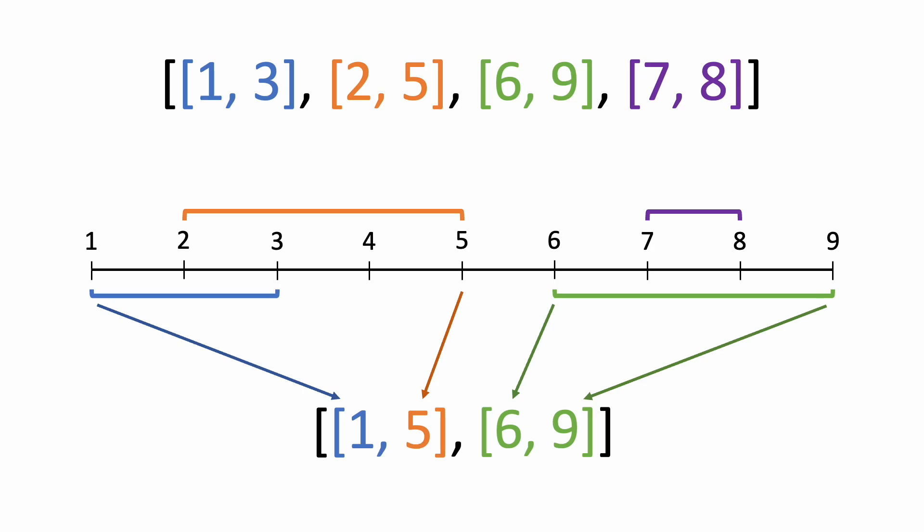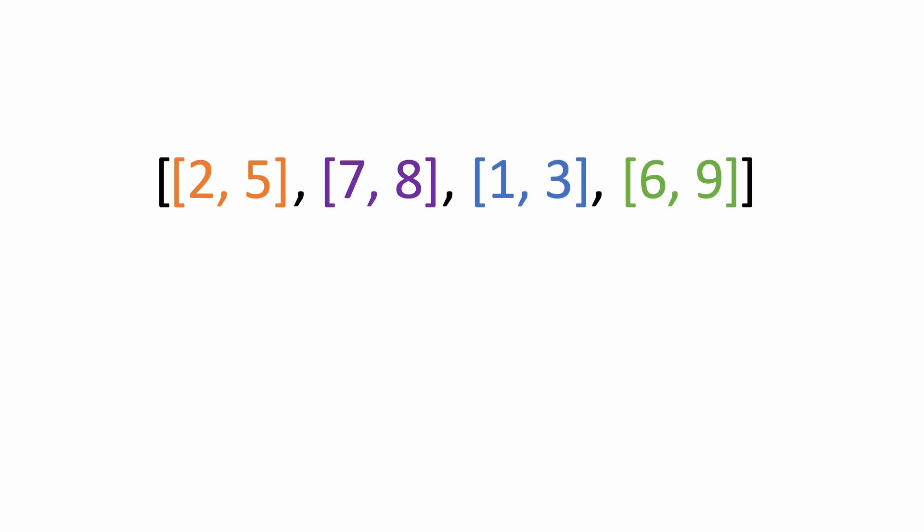So here's how we're going to do it. First of all, the intervals can be in any order, so the first thing we're going to do is sort the intervals by their starting values. This makes things easier since now we can iterate through the array in order. We'll start by comparing the ending value of the first interval with the starting value of the second interval. If the end of the first interval is greater than the start of the second interval, like it is here, then that means the intervals overlap.